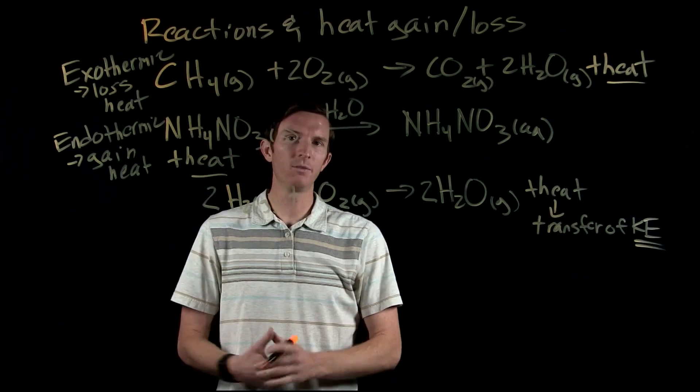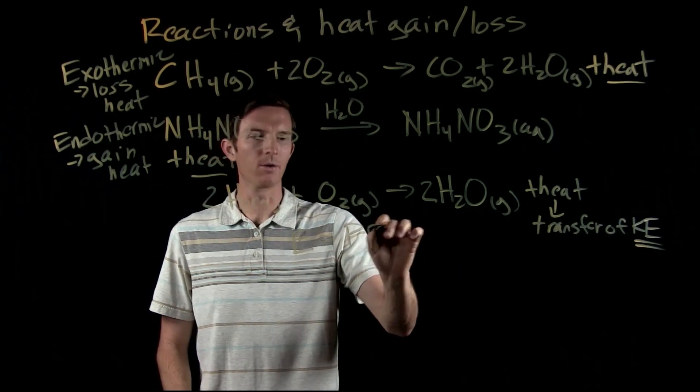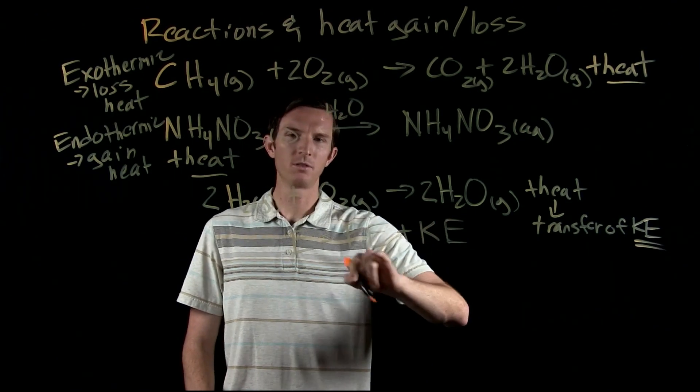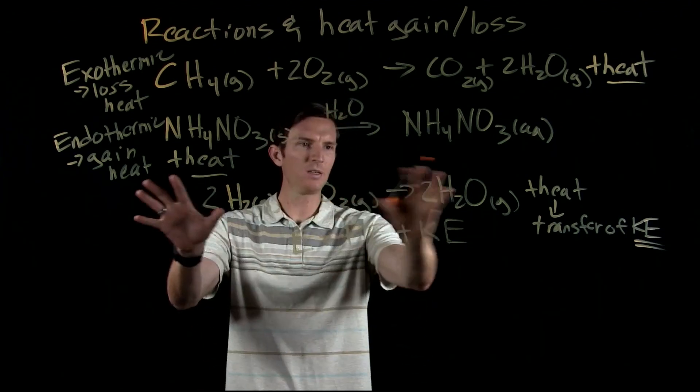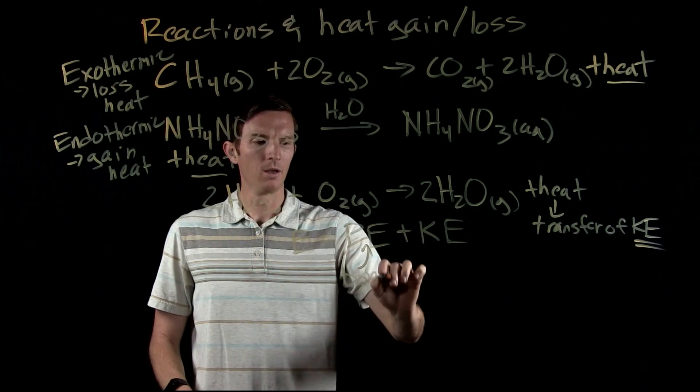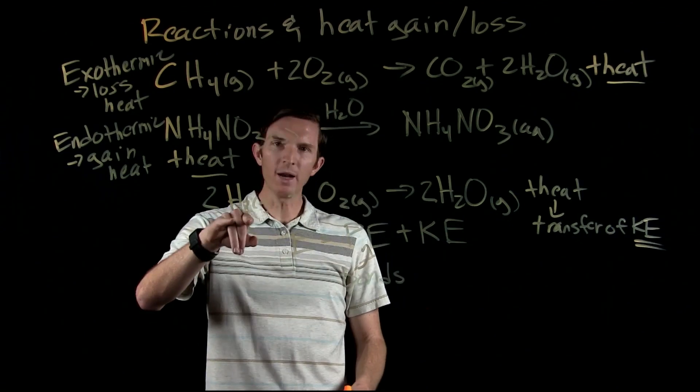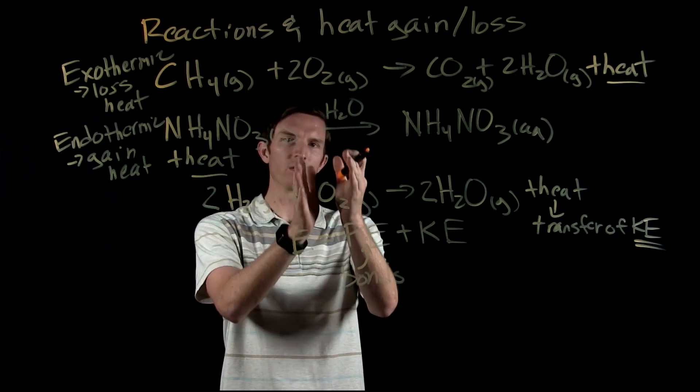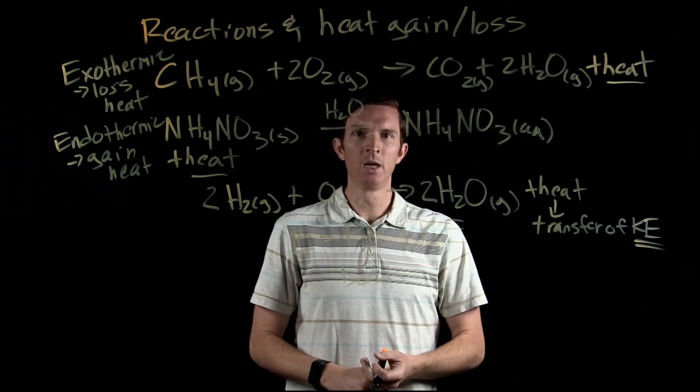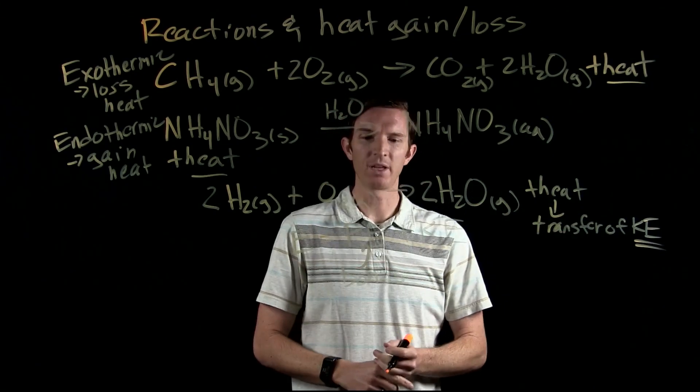We must be getting an energy change here. When we go back to the beginning, we talked about energy being broken up into two broad categories: potential energy and kinetic energy—energy of motion and stored energy. In this reaction, where would the energy be stored? The energy would be stored in our bonds. We have a reaction happening: we're breaking the hydrogen-hydrogen bond and the oxygen-oxygen bond, and we're forming hydrogen-oxygen bonds. When this is happening, we are changing potential energy to kinetic energy.